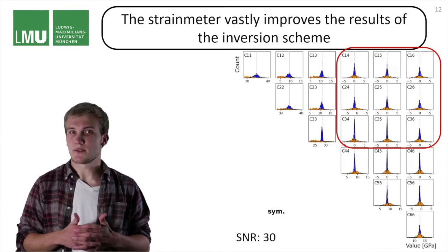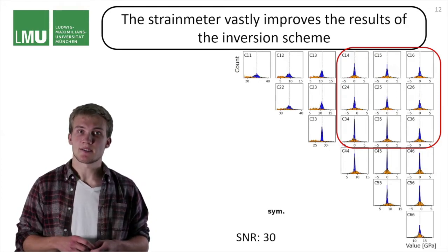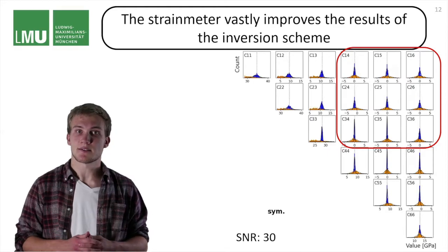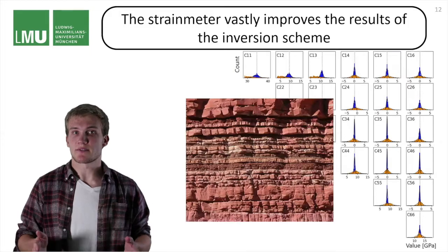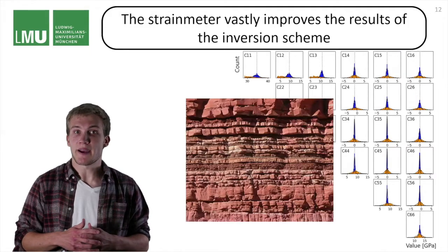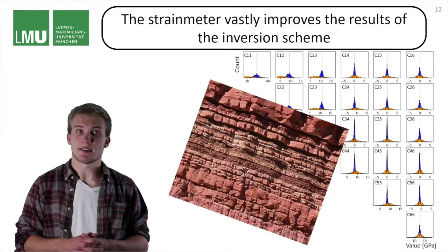This leads up to the question: is it possible to retrieve the symmetry axis of an estimated elastic tensor? This method would be huge for seismic reservoir applications, as you could basically resolve how the bedding is oriented in the subsurface.